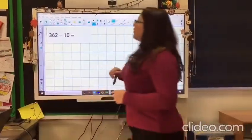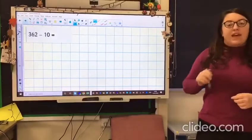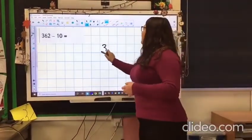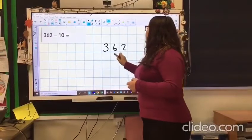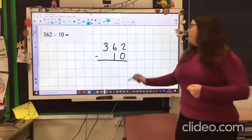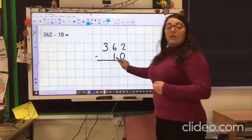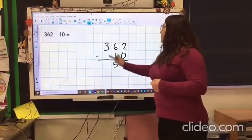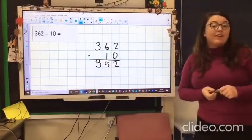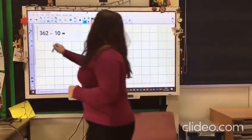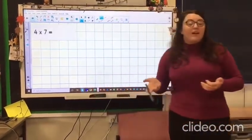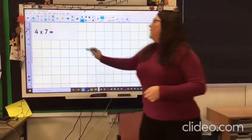Okay, 362 take away 10. Again you can probably do this in your head, but using column methods, which you can always do: 2 take away nothing is 2, 6 take away 1 is 5, 3 take away nothing is 3. So your answer should be 352. Okay, basic times table facts: 4 times by 7 is 28.